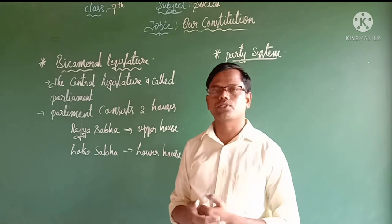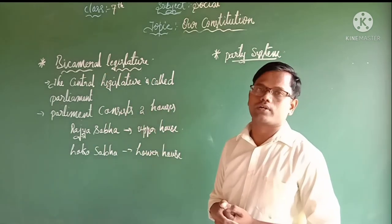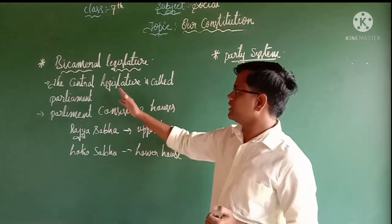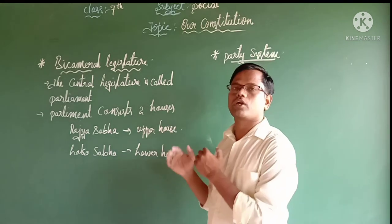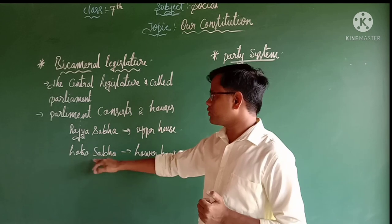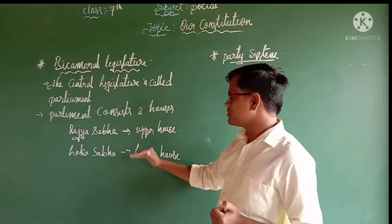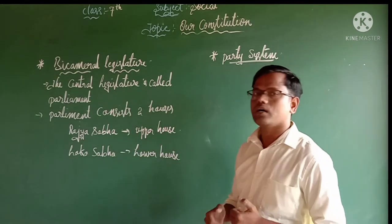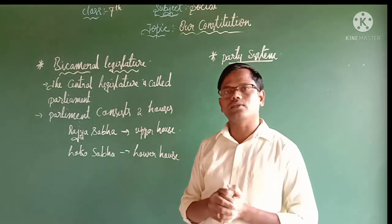The next feature is bicameral legislature. Our constitution provides for a bicameral legislature. The central legislature is called the Parliament, which consists of two houses: the first is the Lok Sabha, and the second is the Rajya Sabha. The Lok Sabha is considered the lower house and the Rajya Sabha is considered the upper house.